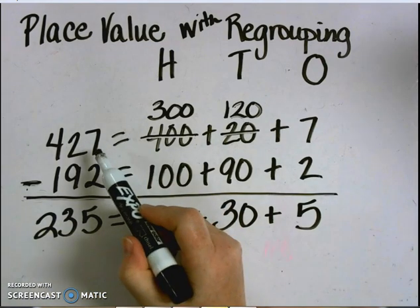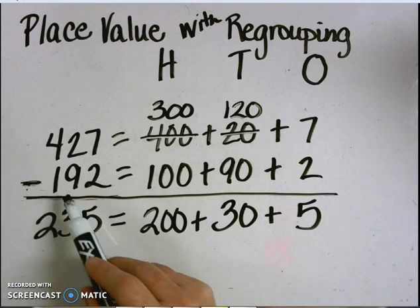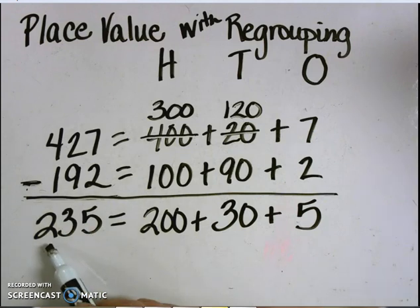So in our original problem, 427 subtract 192 equals 235.